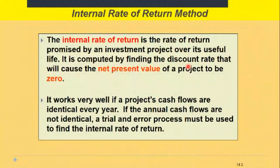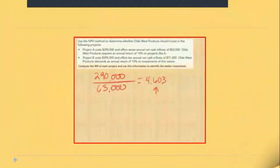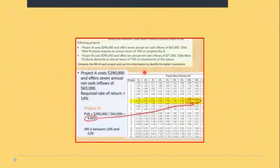That discount rate — the one causing NPV to equal zero — is then compared with the rate of capital borrowing. In exams, you are given that rate, so you don't need to worry about calculating it yourself.